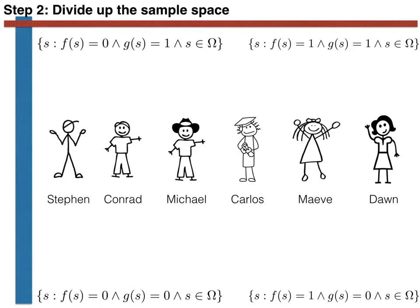In the top right, s is a member of the subset if f(s) equals 1 (female) and g(s) equals 1 (name begins with M). In the bottom right, s is a member of the subset if f(s) equals 1 (female) and g(s) equals 0 (name does not begin with M). In the bottom left, s is a member of the subset if f(s) equals 0 (male) and g(s) equals 0 — a male whose name does not begin with M. In all cases, s must be a member of the sample space.